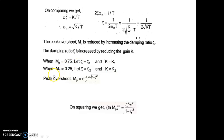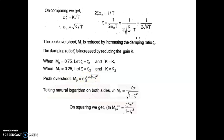The general expression for peak overshoot is Mp = e^(−ζπ / √(1−ζ²)). Taking the natural logarithm on both sides: ln(Mp) = −ζπ / √(1−ζ²). Squaring both sides: [ln(Mp)]² = ζ²π² / (1−ζ²).